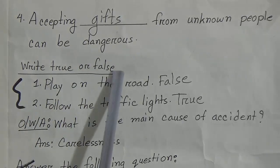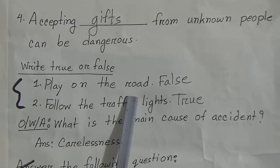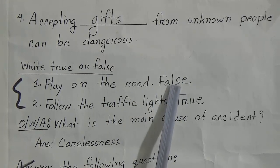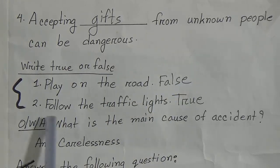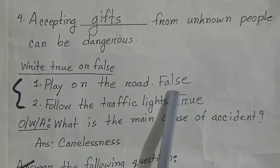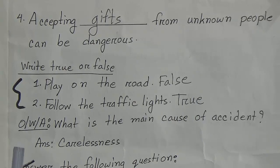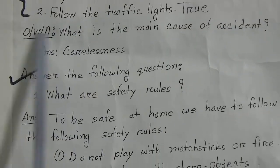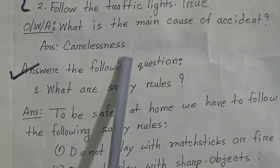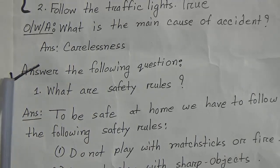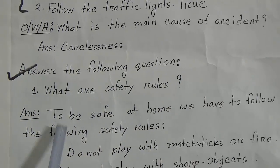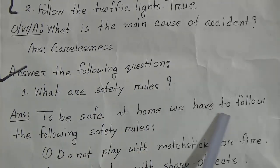Now write true or false. Number 1: play on the road — we should not play on the road, so this statement is false. Number 2: follow the traffic lights — yes, we should follow the traffic lights, so this statement is true. Now one-word answer: what is the main cause of accidents? — the answer is carelessness.